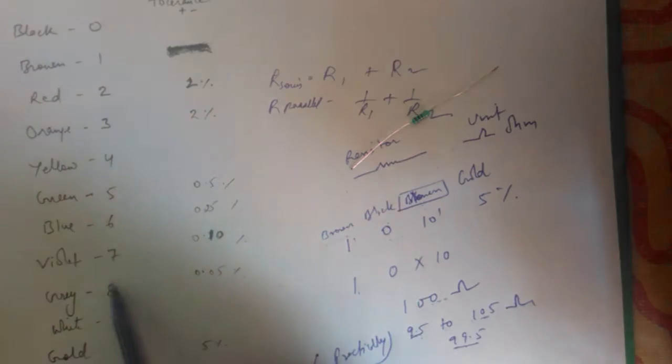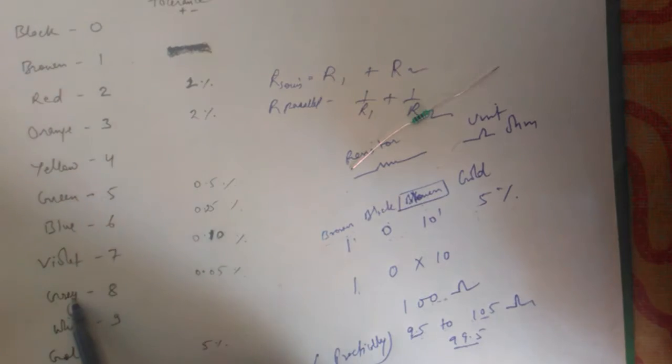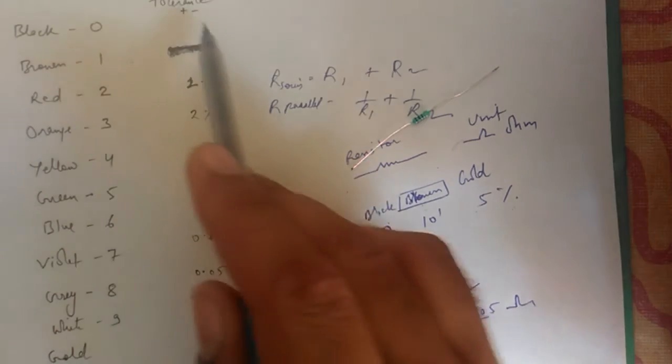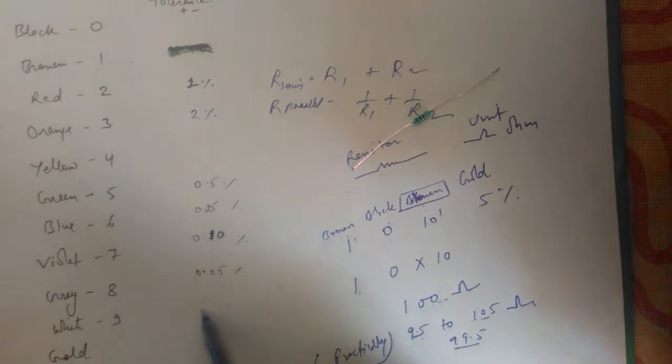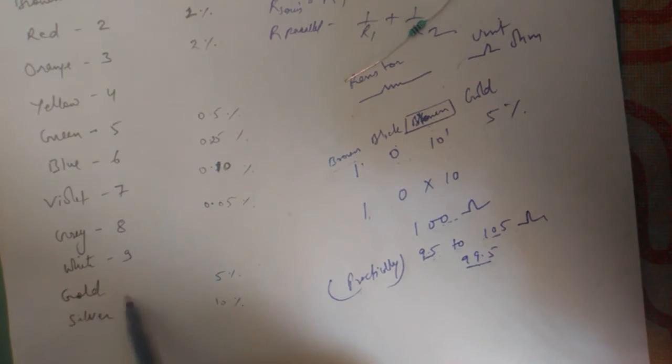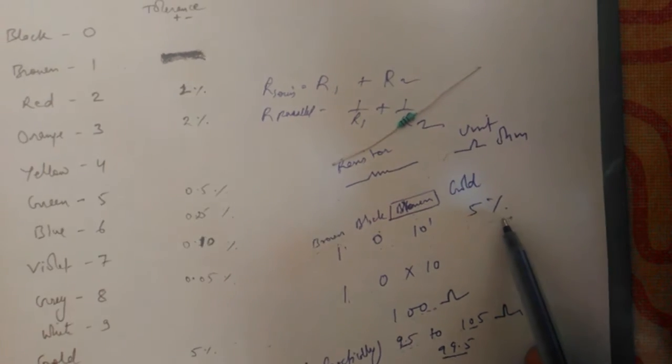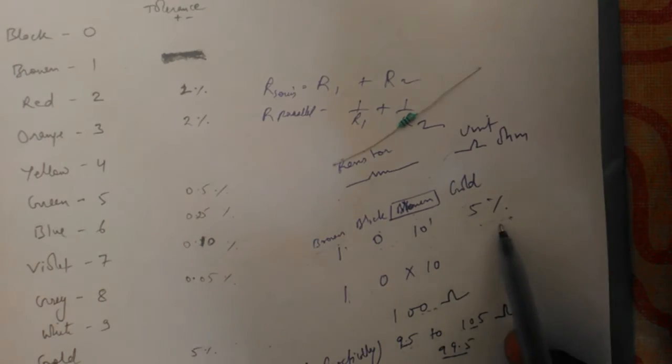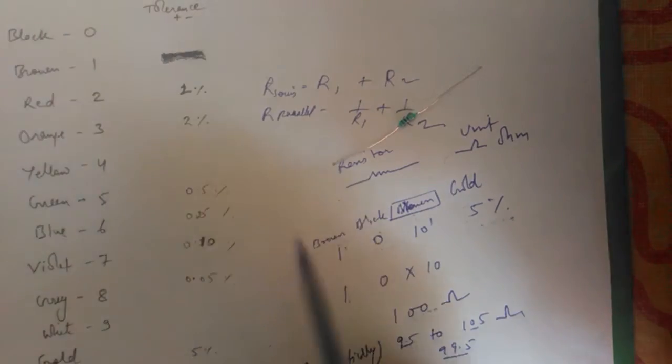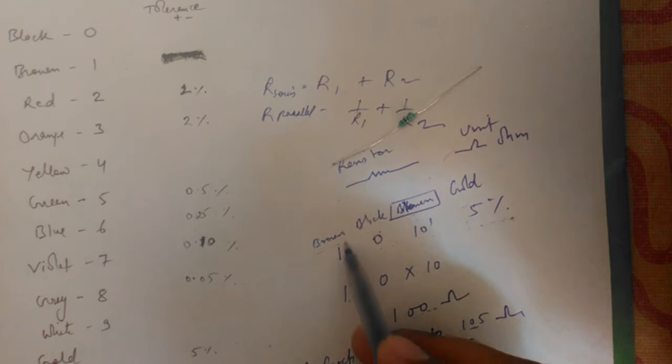For this we have a resistance conversion chart which gives digit values to these colors. And this is the tolerance for every color. For particular resistor, for gold it is 5%, so we write here 5% for the golden color is the tolerance.